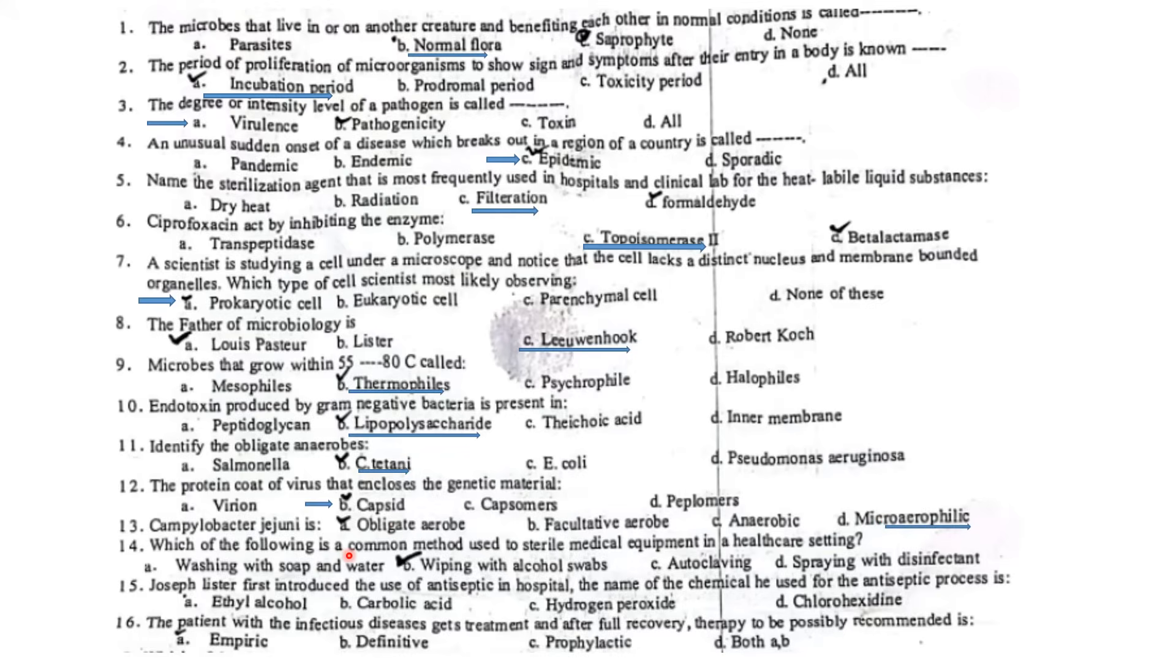The following is a common method used to sterilize medical equipment in healthcare settings. Medical equipment is sterilized by using autoclaving. Joseph Lister first introduced the use of antiseptics in hospitals. The chemical he used for the antiseptic process is carbolic acid, also called phenol. The patient with infectious disease gets treatment and after full recovery, therapy may be possibly recommended as empiric.